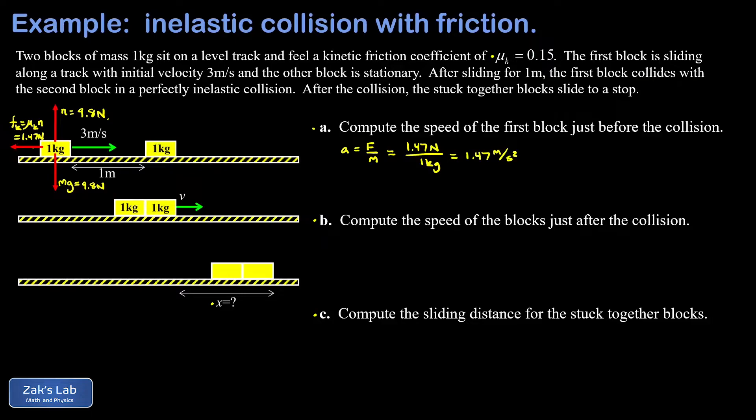Now when we take this acceleration and plug it into a kinematics equation, you have to remember to put a minus sign on it. Because we're going to use a coordinate system where rightward means positive and leftward means negative. So this is negative 1.47 when we plug it in.